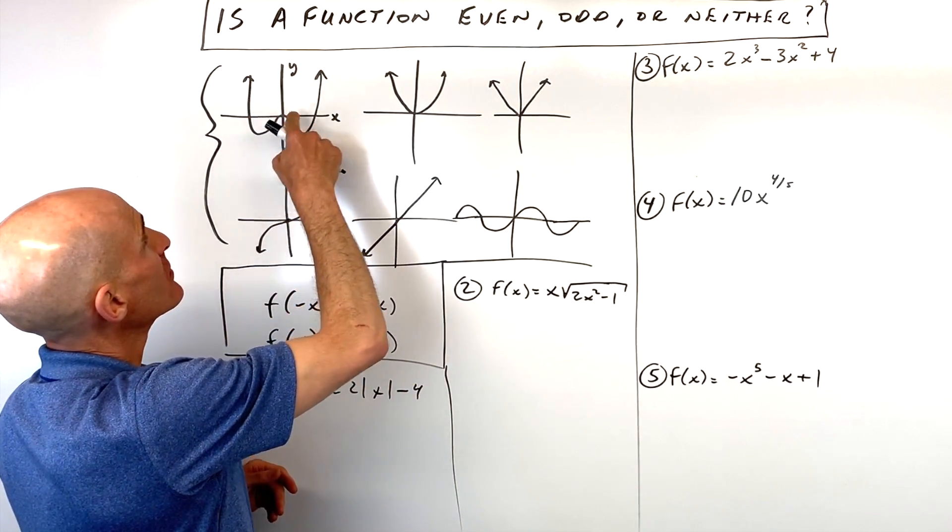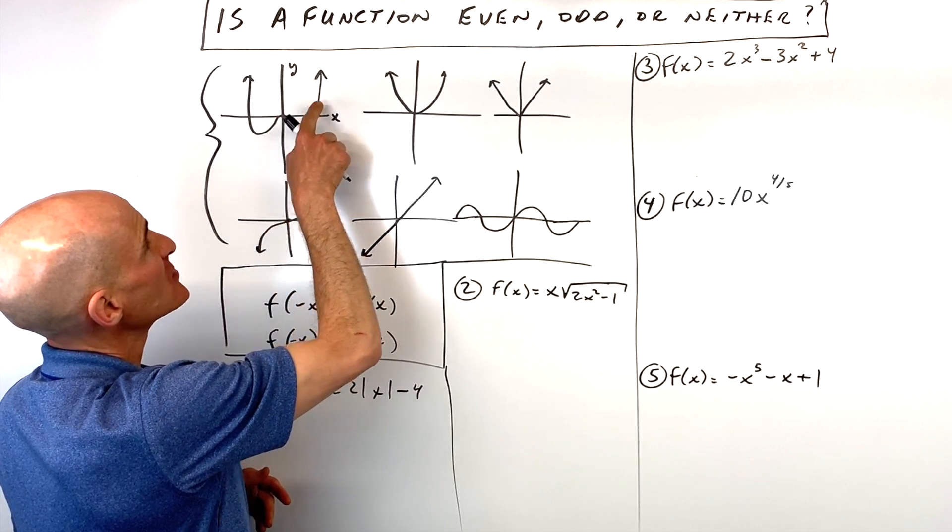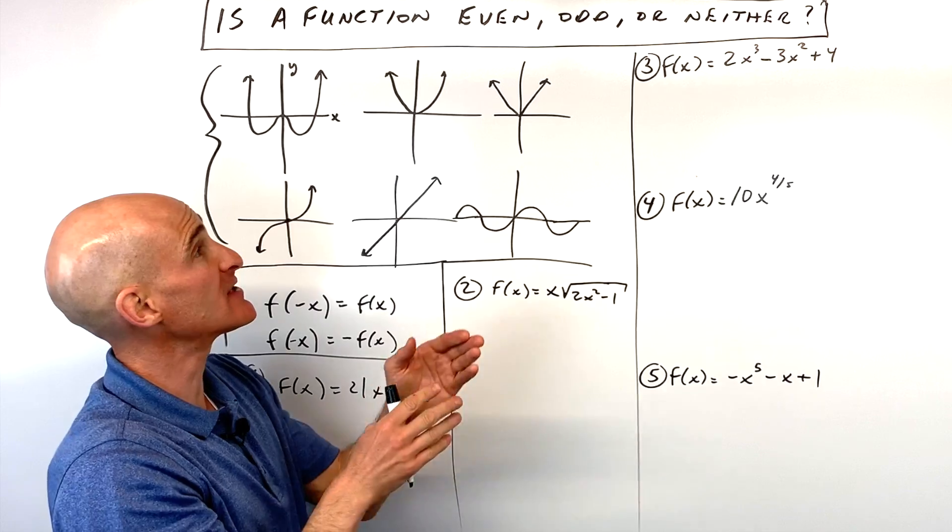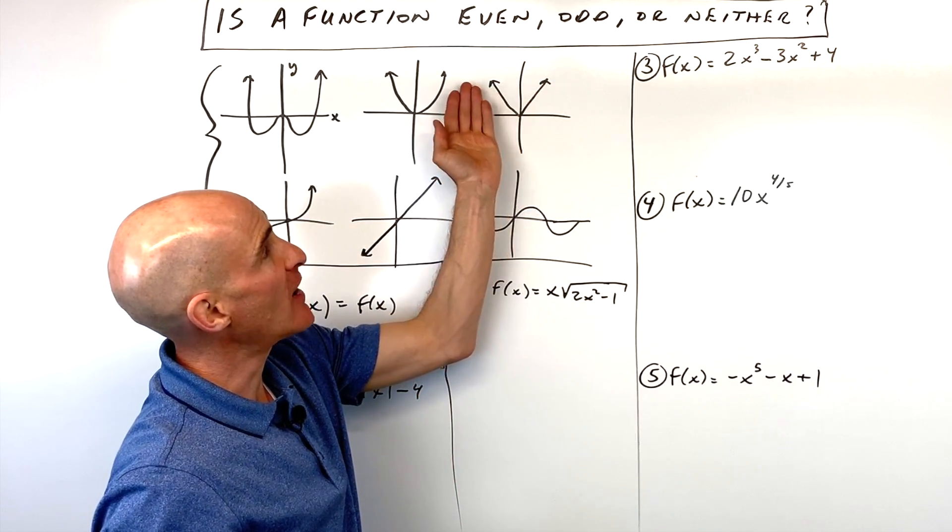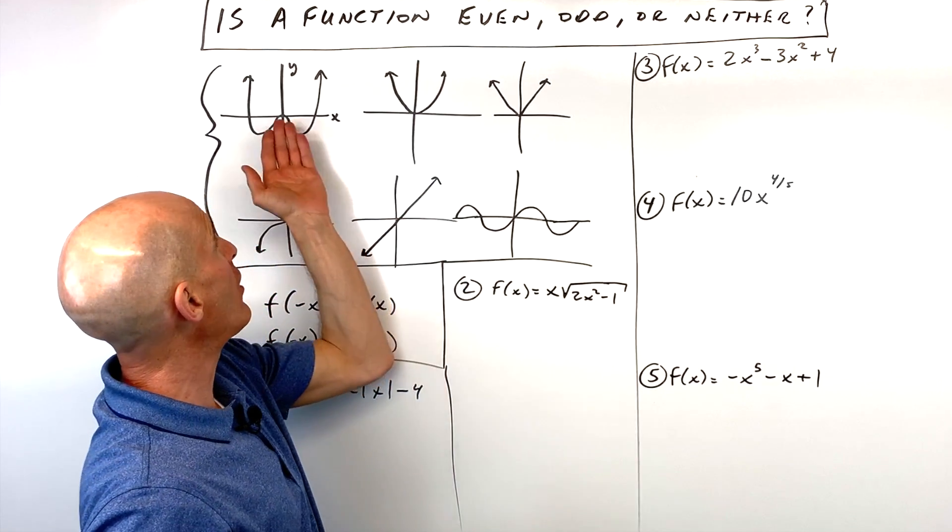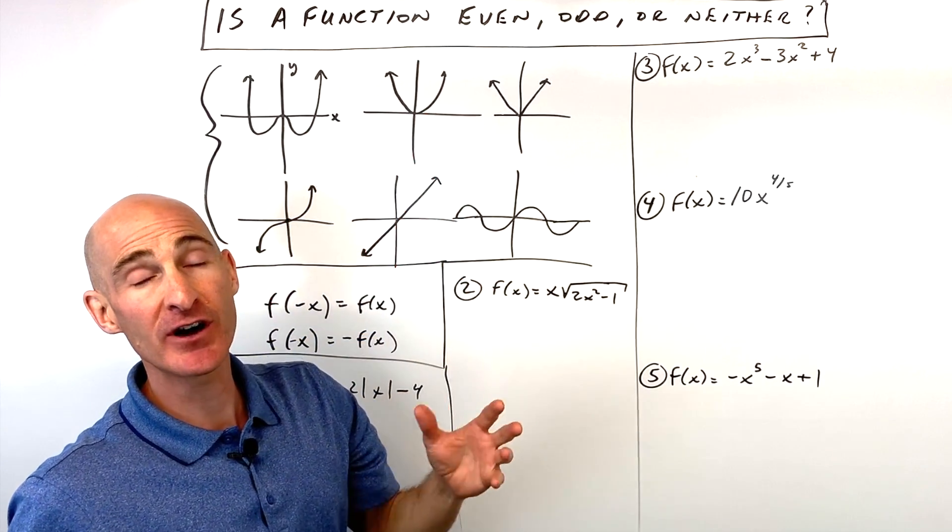So you can see here, if you fold this W-shaped graph, it's going to match to itself. This is even. If you fold this parabola over the y-axis, you see it matches with itself. It's even. If you take this absolute value graph, you fold it over the y-axis, it matches with itself. It's even. So all three of these top ones are going to be even functions.